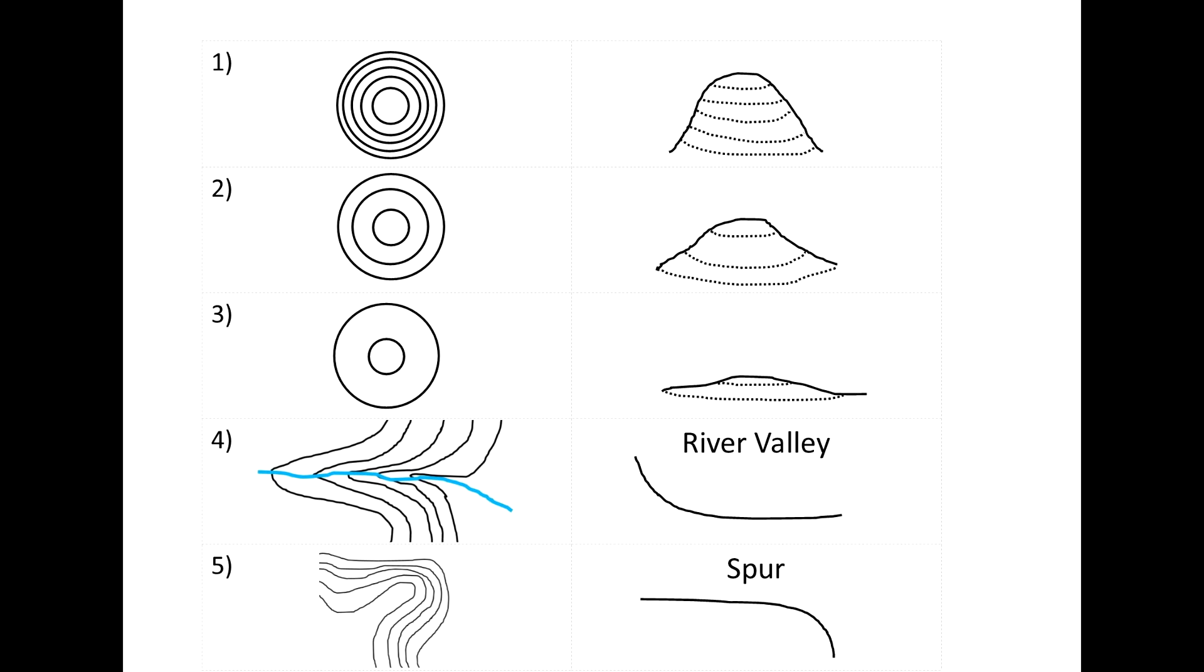Now if we look at example number 1, you're going to see that the contour lines are fairly close together, and this represents a steeper hill. If we look on the right, the example shows a fairly steep hill with these close contour lines. If we compare this to number 2, the contour lines are further apart.